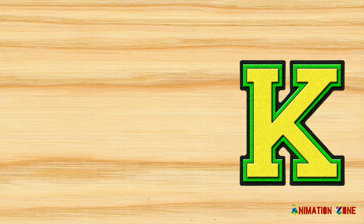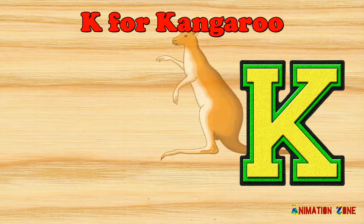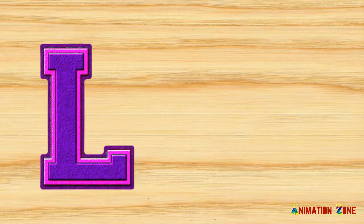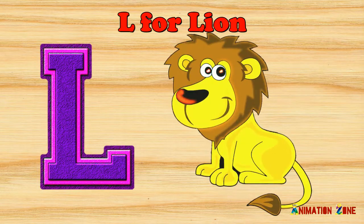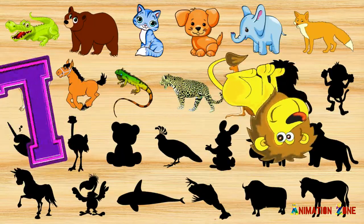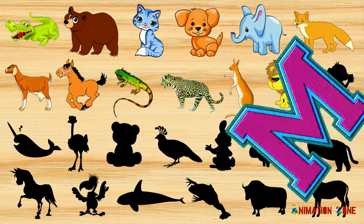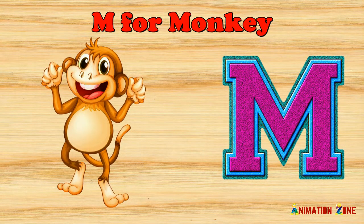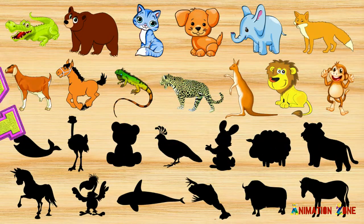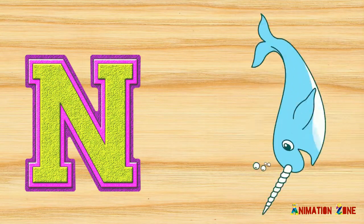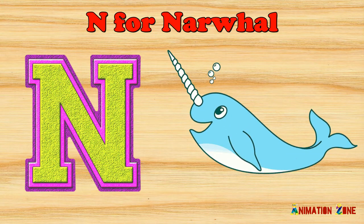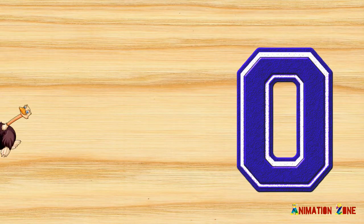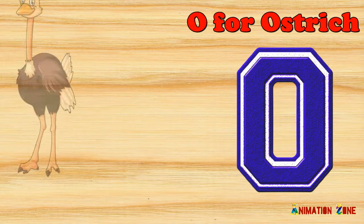K. K for kangaroo. L. L for lion. M. M for monkey. N. N for newt. O. O for ostrich.